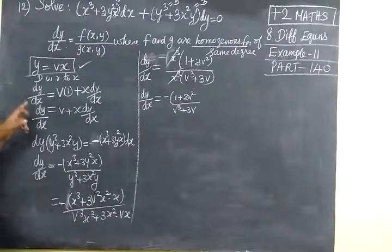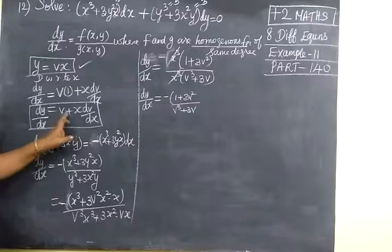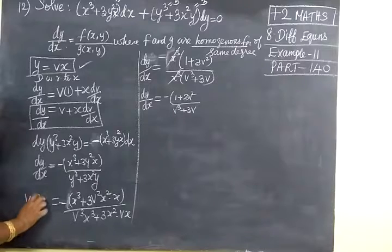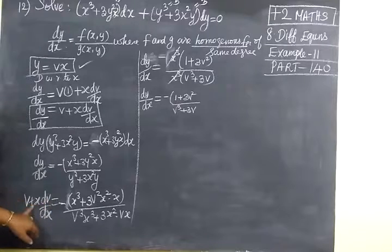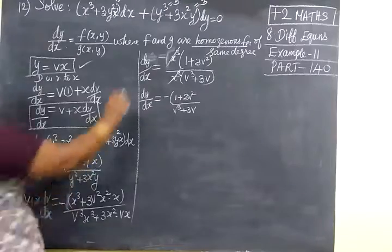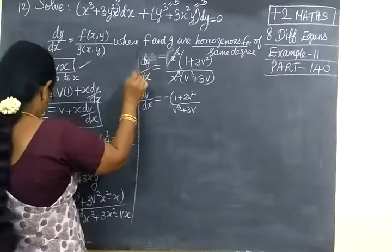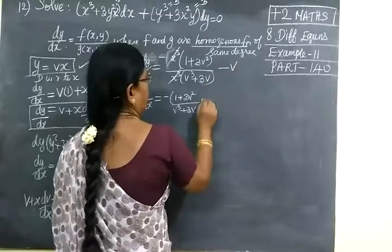For dy by dx, you have to substitute v plus x into dv by dx. So you are writing v plus x into dv by dx equal to minus 1 plus 3v squared by v squared plus 3v. The variable is changed into x and v — no y at all. Now take v to the other side, so x into dv by dx equal to minus 1 plus 3v squared by v squared plus 3v, minus v.